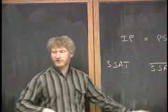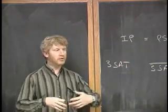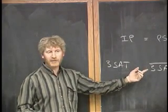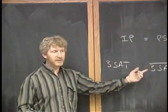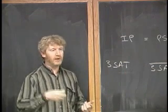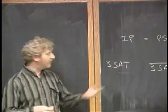If she sends me a true-false set of values, and I check to make sure that they don't work, am I convinced that there's no assignment? No, because there might be some other one, so she'd have to send me another one, and another one. How many would she have to send me until I'm convinced that there's no 3SAT?